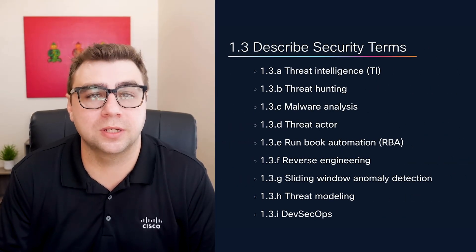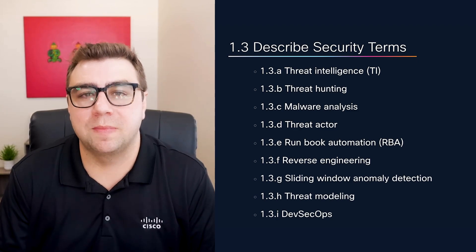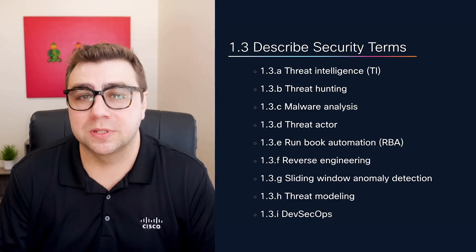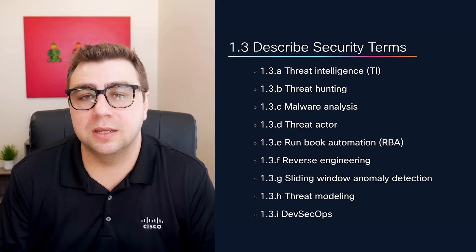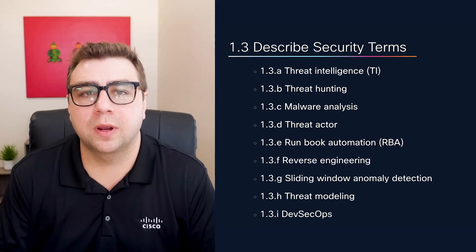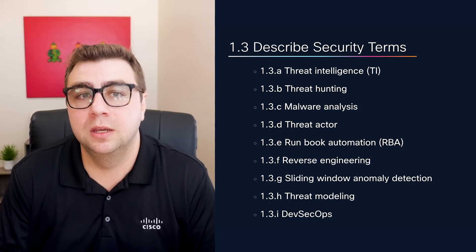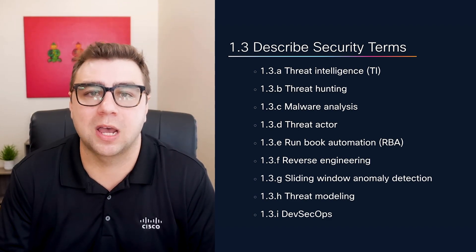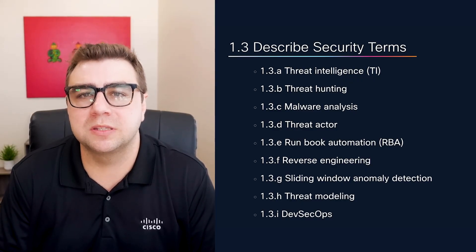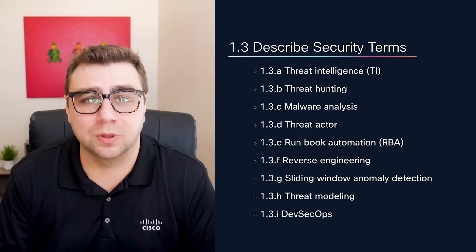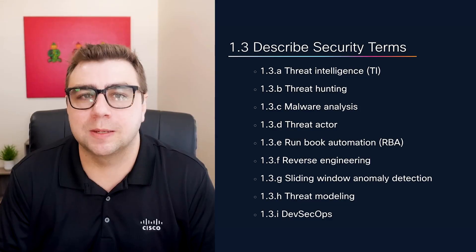Next, you'll encounter a section loaded with terminology. This includes threat intelligence, threat hunting, malware analysis, reverse engineering, and threat modeling. You don't have to master each of these areas, but you do need to understand their purpose. For example, threat intelligence helps teams make informed decisions by learning from global threat data. Threat hunting is more proactive — it's about digging through logs or network activity to find evidence of compromise before an alert is triggered. This section also includes newer terms like DevSecOps, which is short for integrating security practices directly into software development life cycles, and RBA — also known as runbook automation — which is about using predefined playbooks to speed up responses during an incident. My advice: build yourself a personal glossary. One sentence per term, keep it simple, and include examples. That really helps when these concepts show up in scenario-based questions.